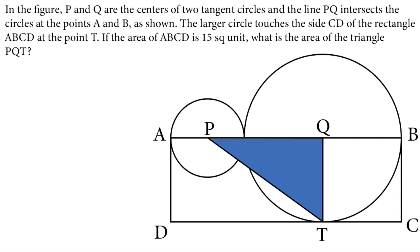In the figure, P and Q are the centers of two tangent circles and the line PQ intersects the circles at the points A and B as shown. The larger circle touches the side CD of the rectangle ABCD at the point T. If the area of ABCD is 15 square units, what is the area of the triangle PQT, which is the blue triangle?